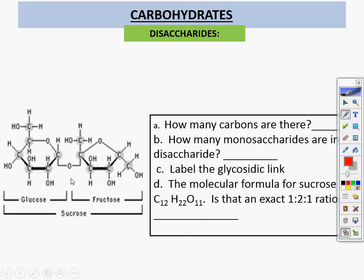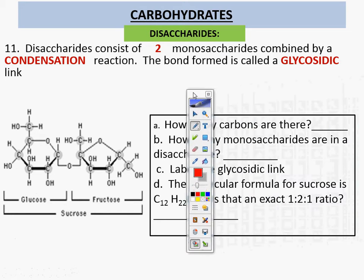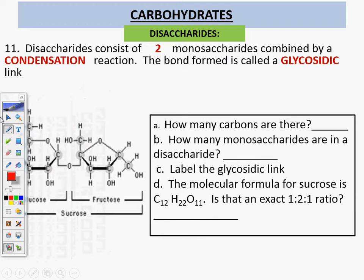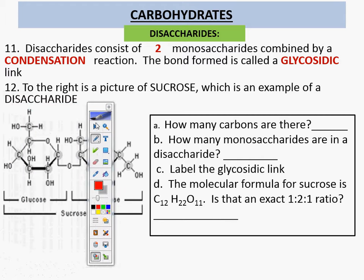Let's talk a little bit about disaccharides. Disaccharides consist of two monosaccharides combined by a condensation reaction. A condensation reaction links two things together. The bond is called a glycosidic link, shown to the right of the picture.